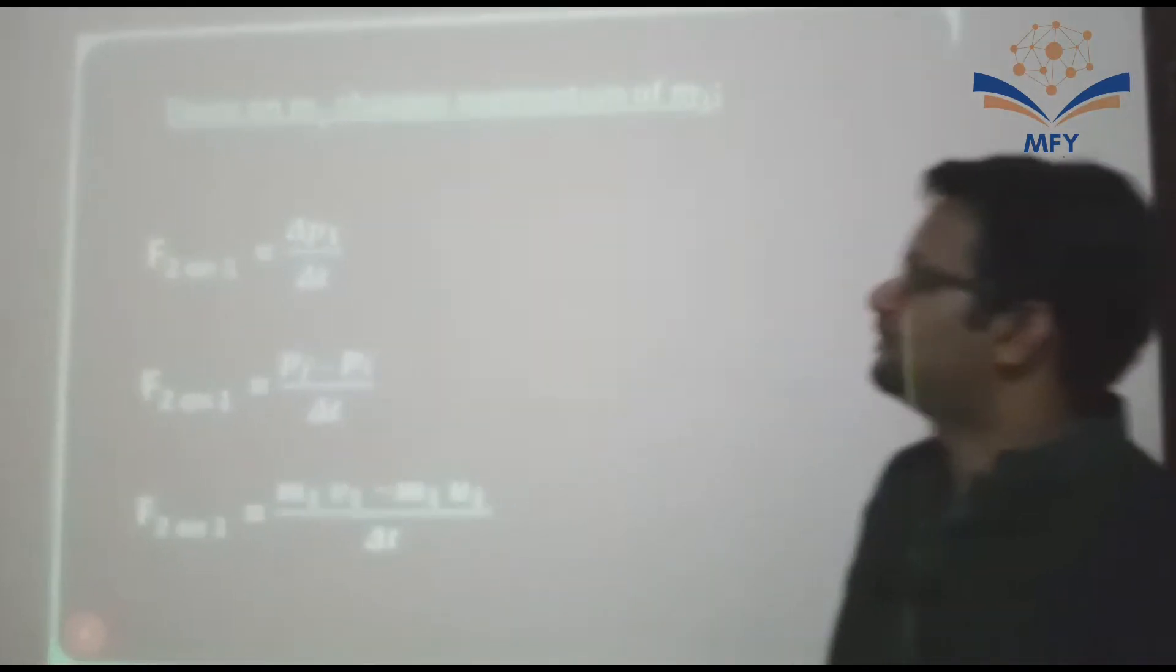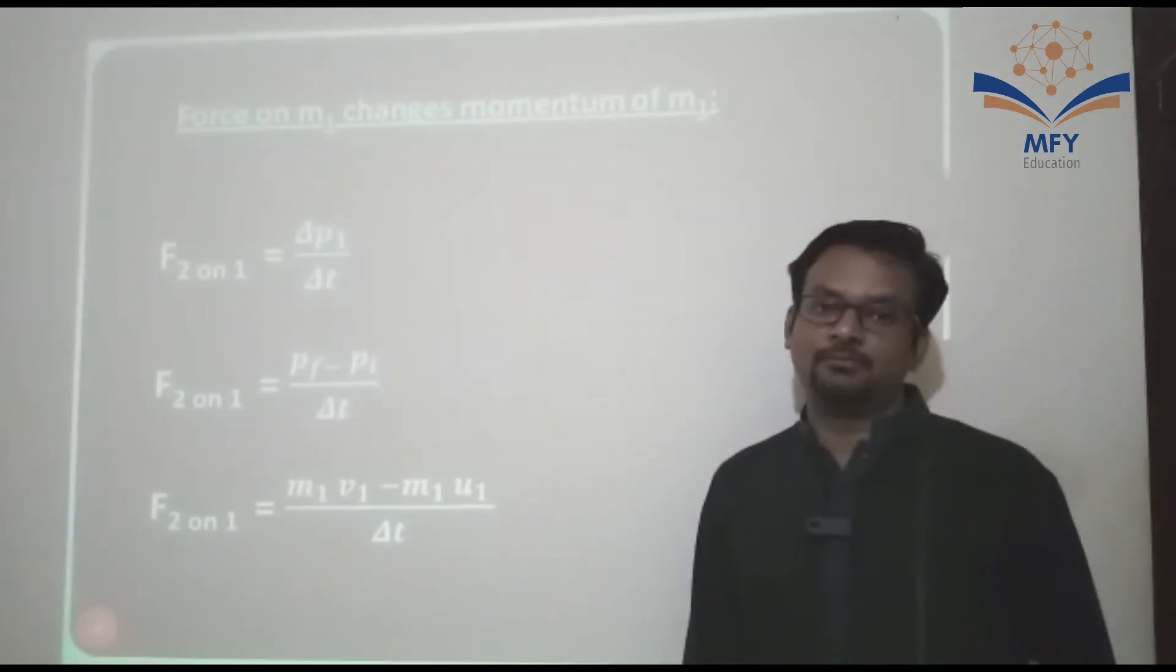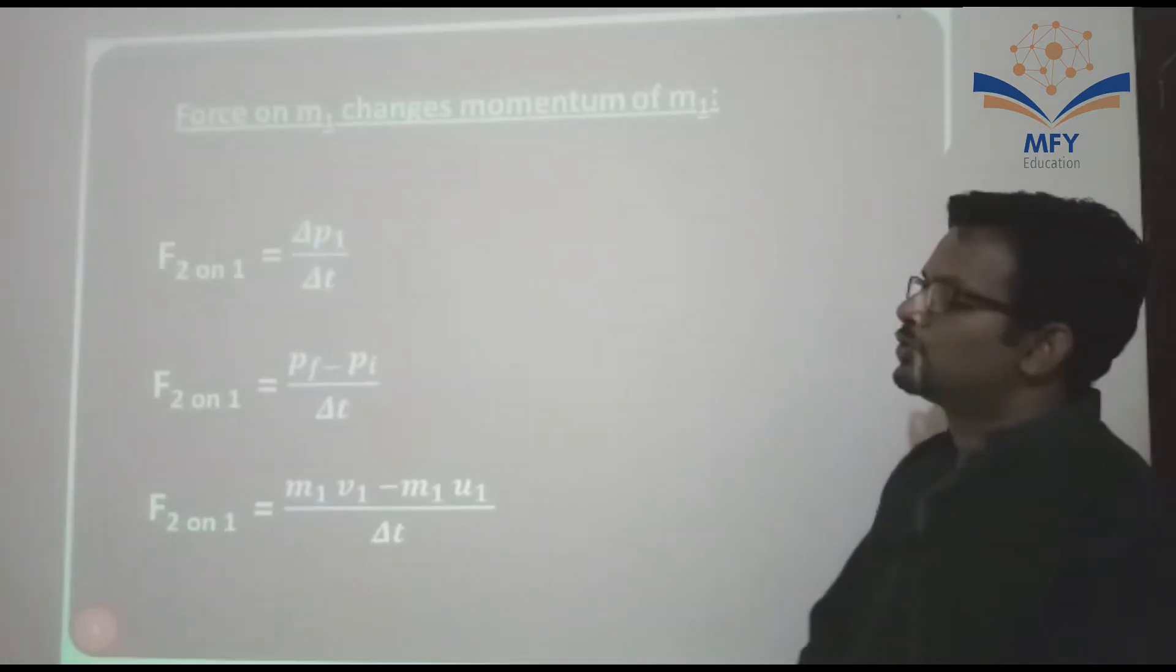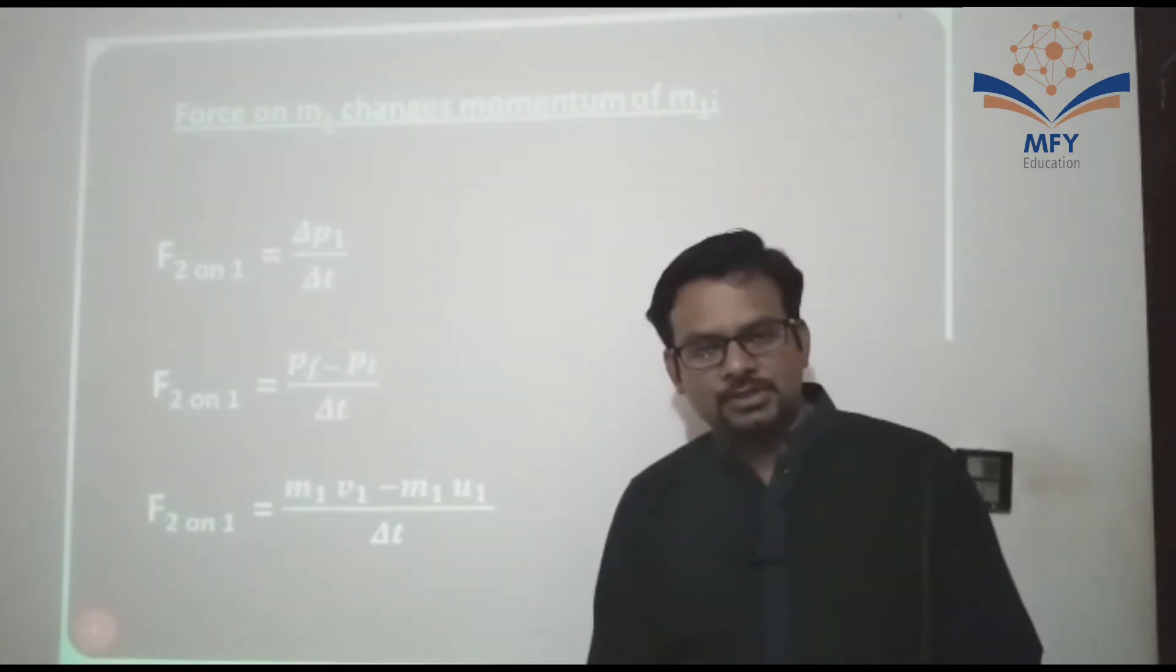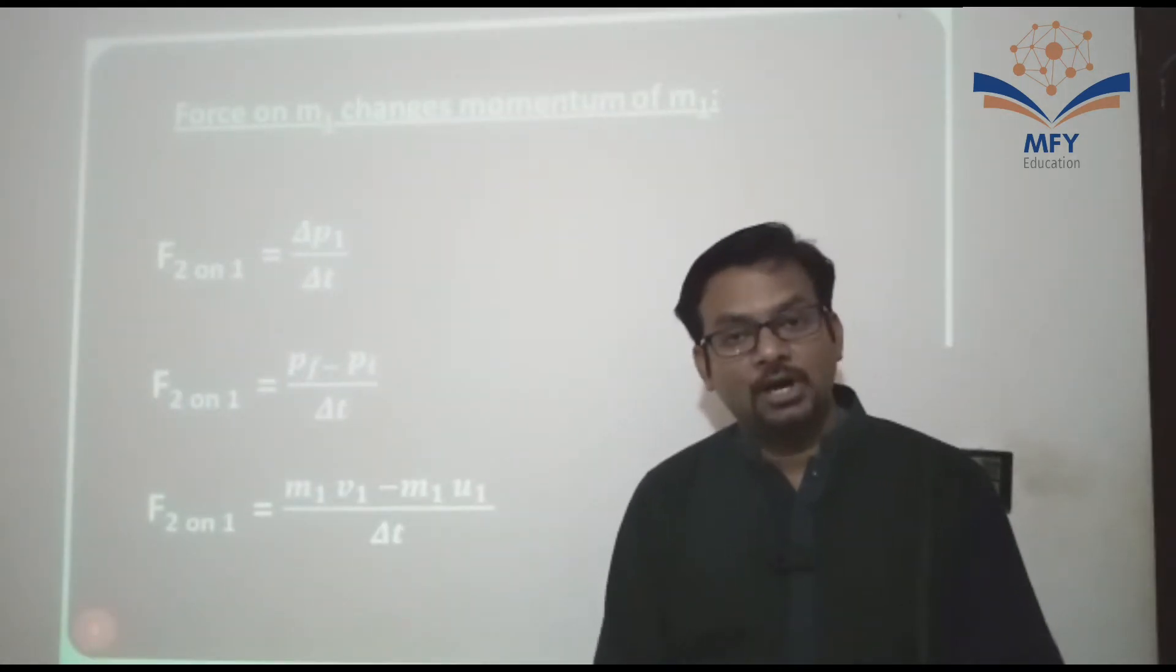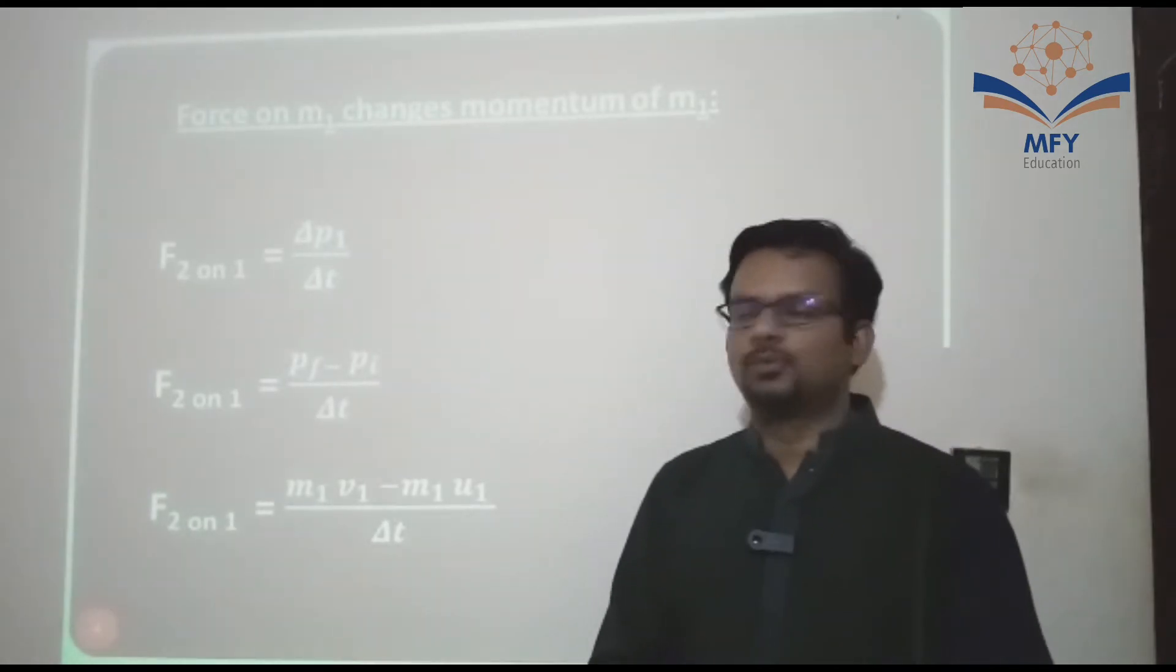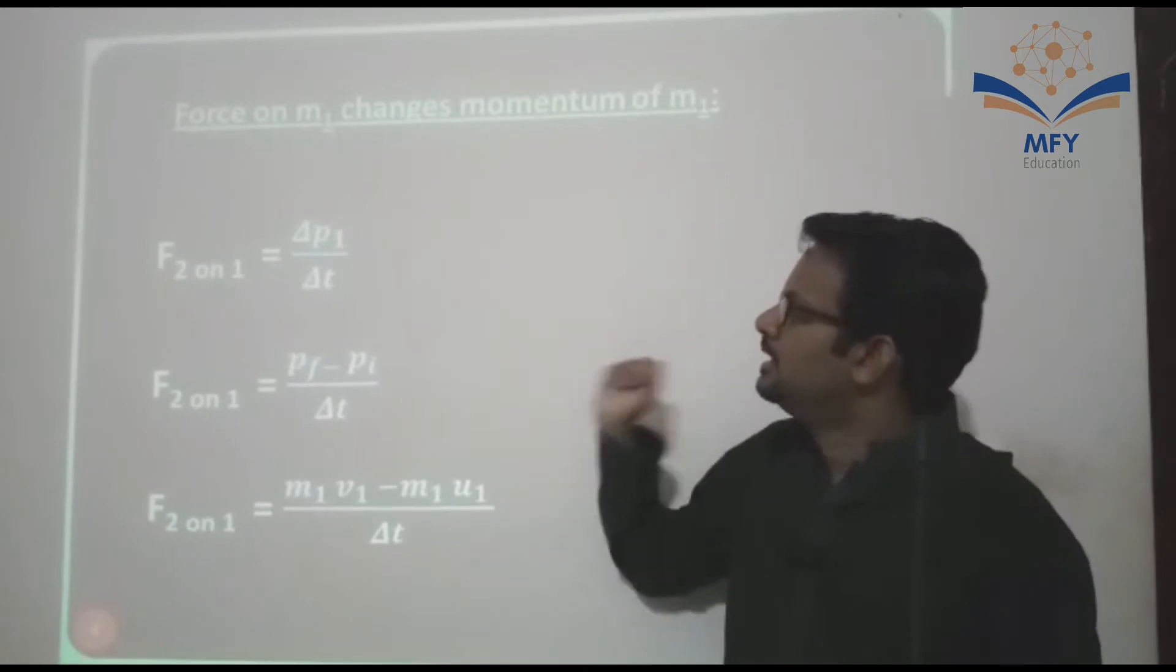Now we find force on body M1. The formula is from Newton's second law of motion. But F is also equal to delta P over delta T. Rate of change of momentum is known as force. So F is equal to delta P over delta T. Delta P is Pf minus Pi.